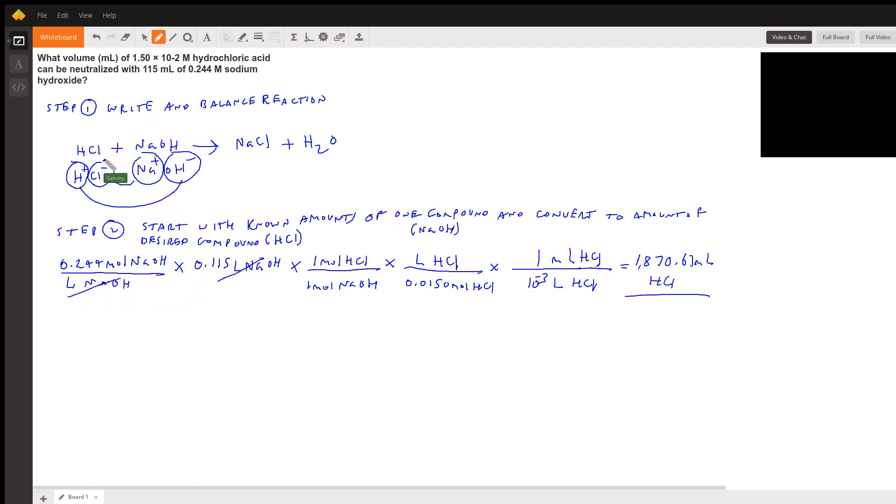Now we need to look at the balanced reaction to convert from moles of NaOH to moles of HCl. It's a one-to-one ratio. We have one mole of HCl over one mole of NaOH, so the moles of NaOH cancel out and we're left with moles of HCl.